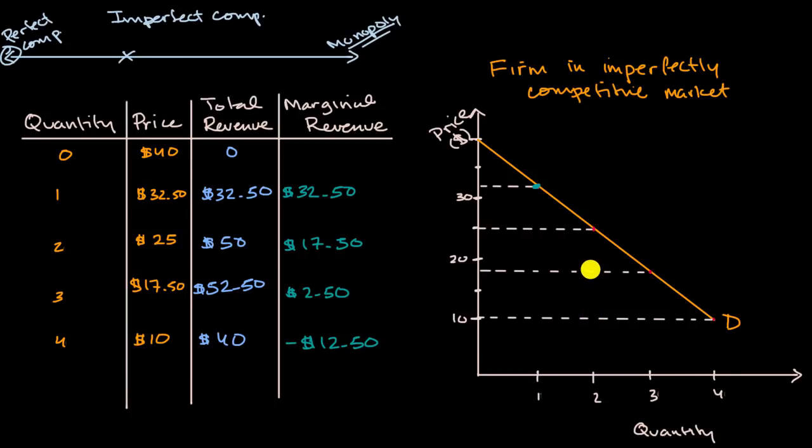At three units, our marginal revenue is $2.50. And so we have a marginal revenue curve that looks more like this.